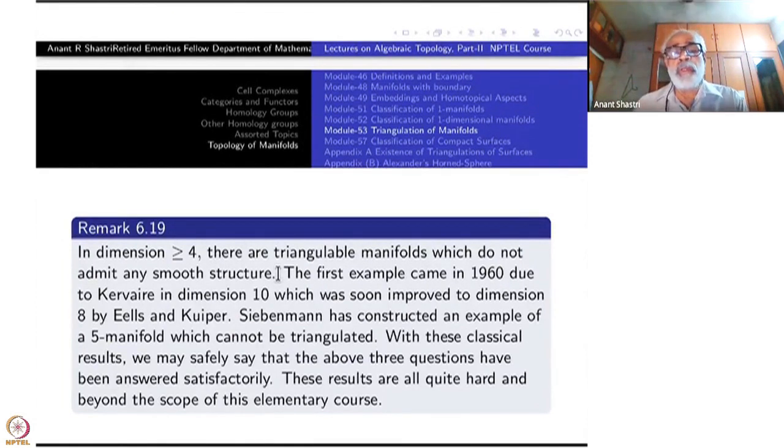But bigger than or equal to four, there are triangulable manifolds which do not admit any smooth structure. Every smooth manifold is triangulable, that's Cairns result. But the other way around, there are manifolds which cannot admit smooth structure. The first example came in 1960 due to Kervaire in dimension 10, which was soon improved to dimension 8 by Eells and Kuiper.